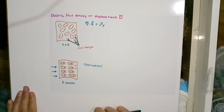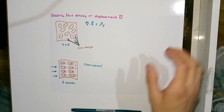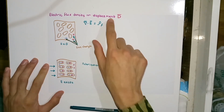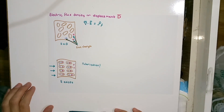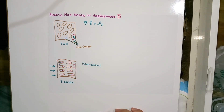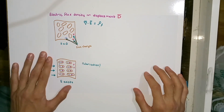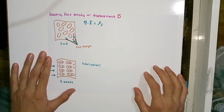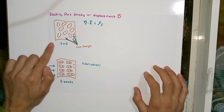Today we are going to explain the electric flux density, also called the displacement vector, and we are going to talk about the significance of this vector that we are going to derive right now.